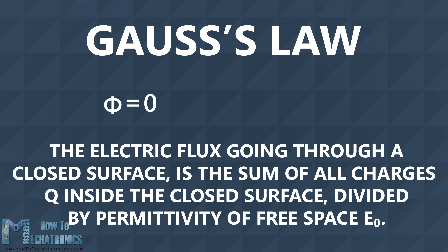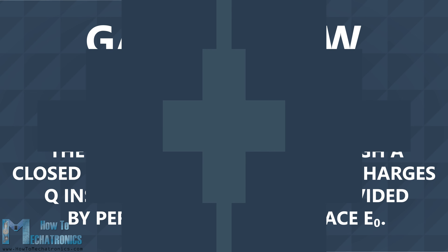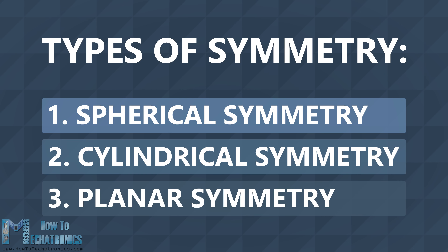If the flux is zero, that means there is no net charge inside the shape. There could be positive and negative charges inside the shape, but the net is zero. No matter how weird the shape, Gauss's law always holds, as long as there is a perfect symmetry in the charge distribution inside the surface. So in order to calculate the electric field, you need a symmetry. And there are three types of symmetry: spherical, cylindrical, and planar symmetry.